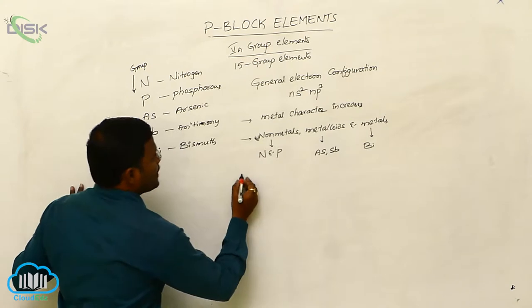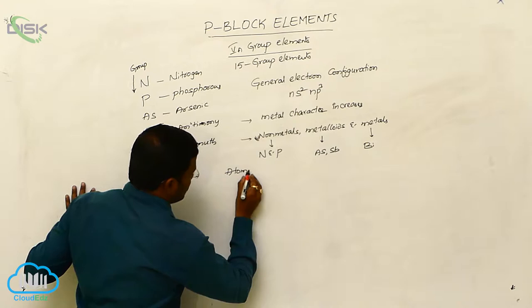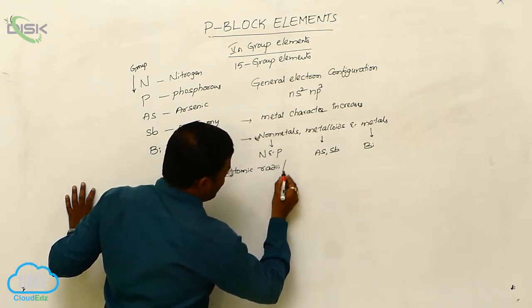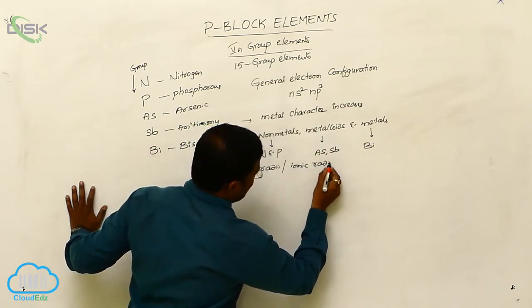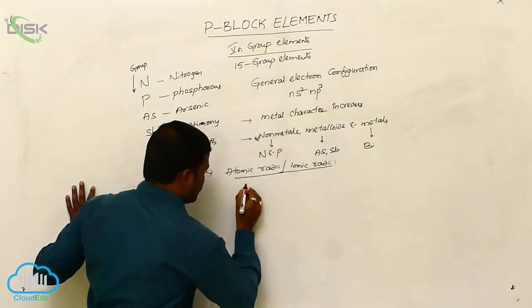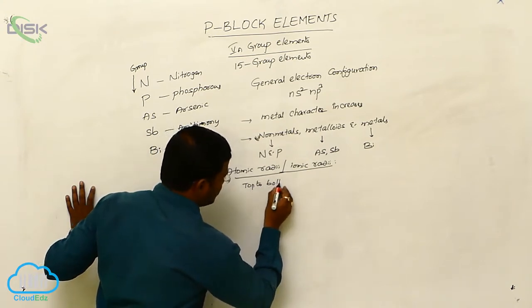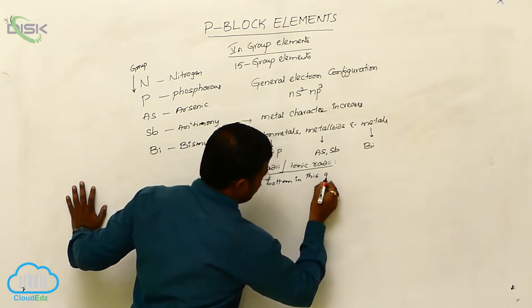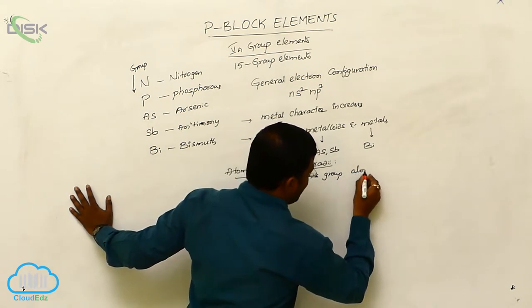Next is atomic radii — atomic radii or ionic radii. From top to bottom in this group, atomic radii increases.